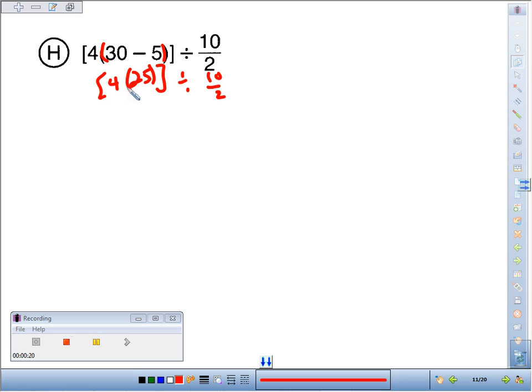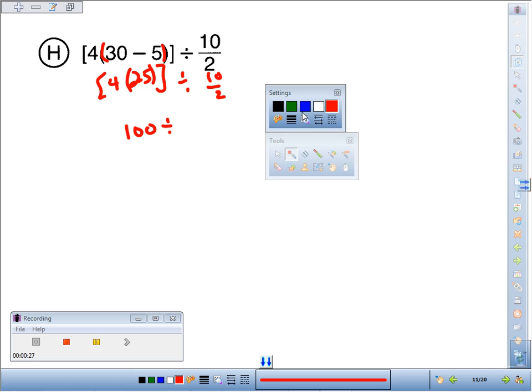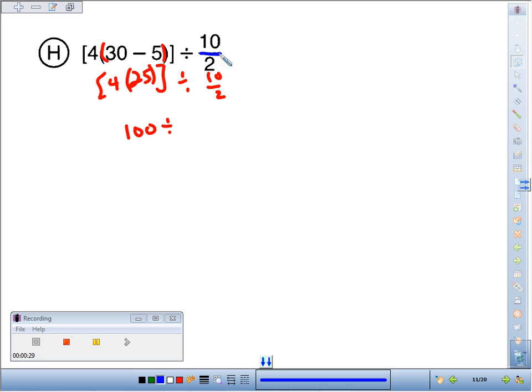Okay, inside the bracket here, 4 times 25, we've got 100 divided by—now the fraction bar is like a grouping symbol. So we need to do this group of stuff first, 10 divided by 2, that's 5. So our final answer here, 100 divided by 5, would be 20.